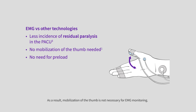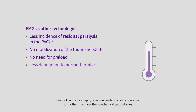As a result, mobilization of the thumb is not necessary for EMG monitoring, for example, when the patient's arms are tucked on the sides. Finally, electromyography is less dependent on intraoperative normothermia than other mechanical technologies.